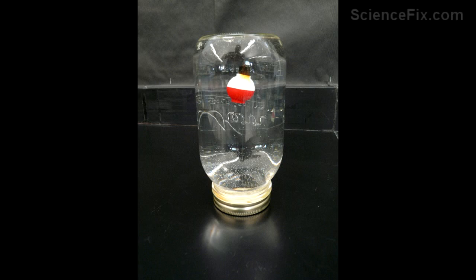This is an accelerometer made out of a fishing bobber attached to a fishing line, and the line is attached to the lid of the jar. The whole apparatus is turned upside down.